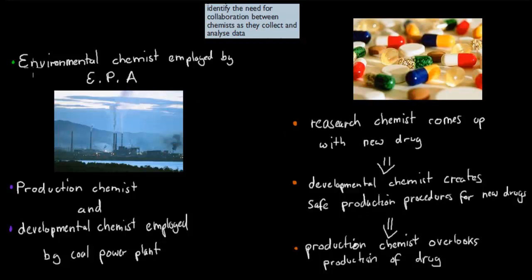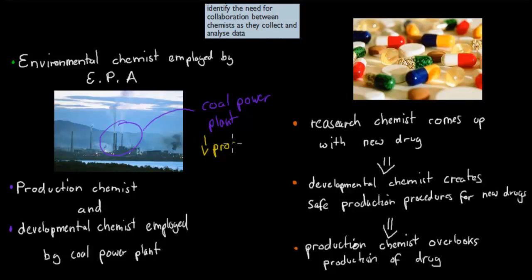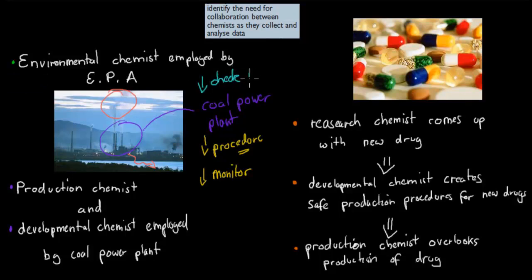Here's a couple of examples. Let's say we have a coal power plant. This coal power plant has to do two things: it has to come up with a procedure to make power from coal, and it has to monitor that procedure to make sure it runs smoothly. You can also see gas coming out of the chimney, and there may be chemicals going into the river, so the environment needs to be checked as well.